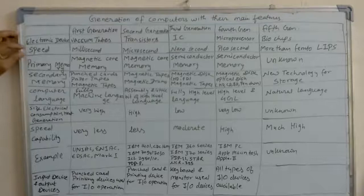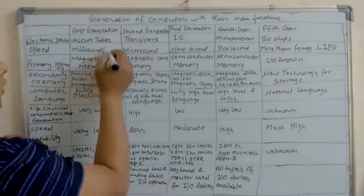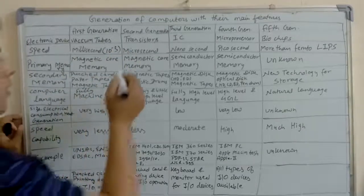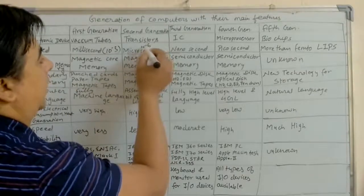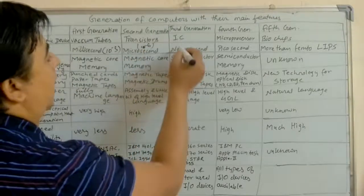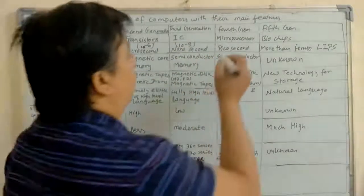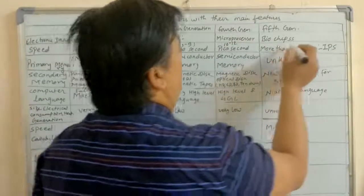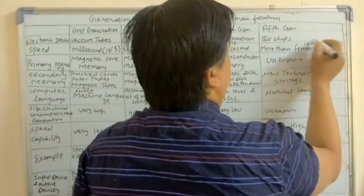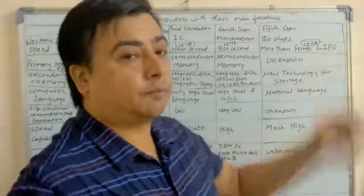Regarding speed: the first generation speed was in milliseconds, that is 10 to the power minus 3 of a second. Second generation was microsecond, 10 to the power minus 6 of a second. Third generation was 10 to the power minus 9 of a second (nanosecond). Fourth generation is 10 to the power minus 12 of a second (picosecond). And fifth generation will be 10 to the power minus 15 of a second (femtosecond).